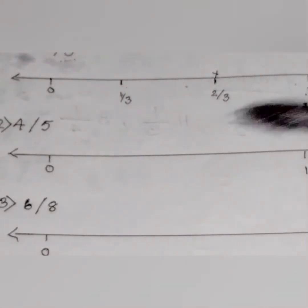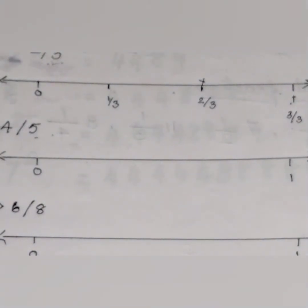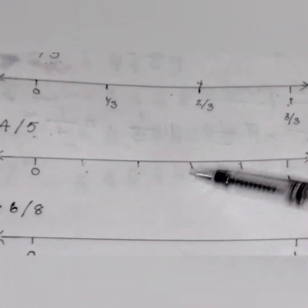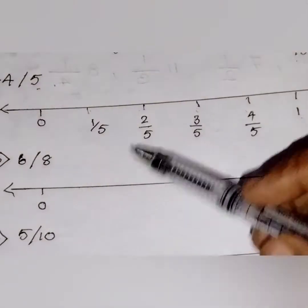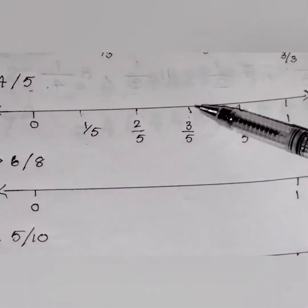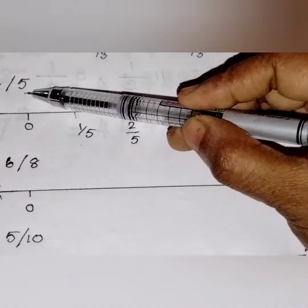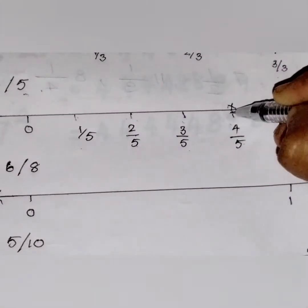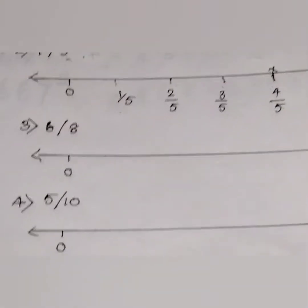Now come to the second question: 4/5. Look at the denominator — it is 5. It means that after 0, we have to make 5 partitions, including 1. That is 1/5, 2/5, 3/5, 4/5 and 5/5, which is 1. Now we are going to mark the fraction 4/5, so I am marking at the 4th partition from the 5 partitions. That is 4/5.